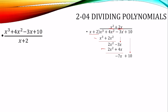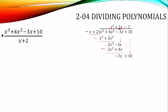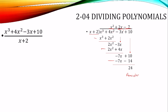Bring down and do it all over again. Divide the first terms: negative 7x divided by x is negative 7. Then we multiply — negative 7 times x plus 2 is negative 7x minus 14. Then we subtract: negative 7x minus negative 7x is 0, and 10 minus negative 14 gives 24. That is the remainder. There is nothing else to bring down, so we're done. We write it as plus that over the divisor, and you have your quotient.